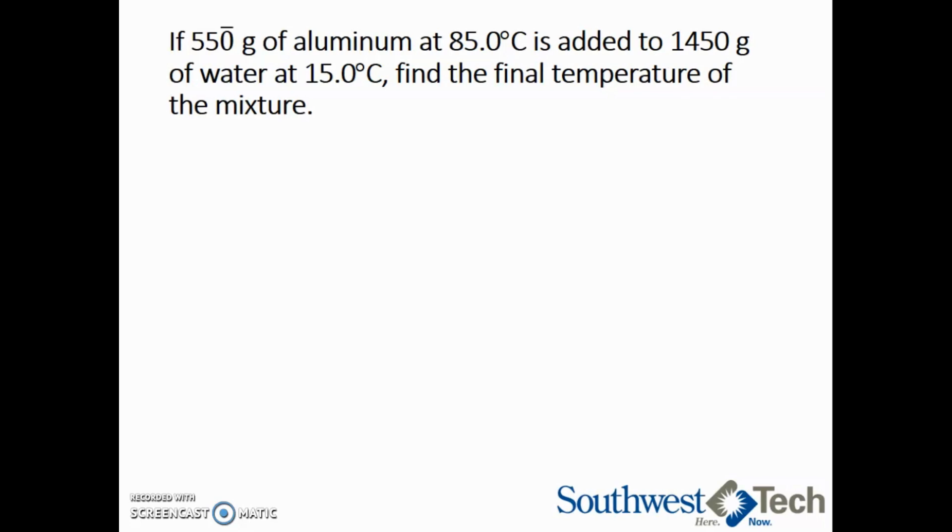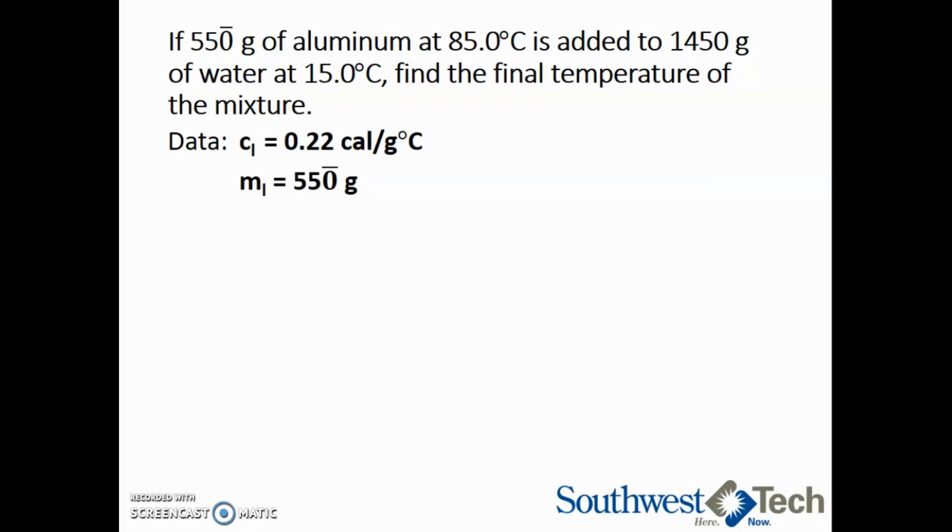The specific heat of aluminum, or c_L, is 0.22 calories per gram degree Celsius. The mass of the aluminum, or m_L, is 550 grams. The temperature of the aluminum is 85 degrees Celsius.